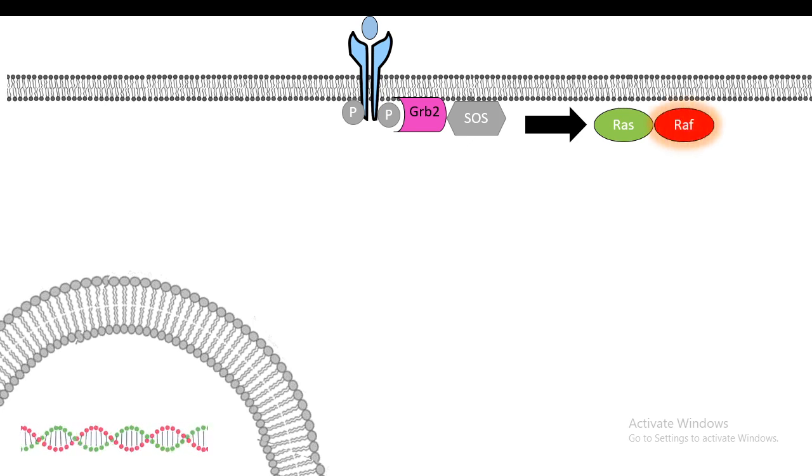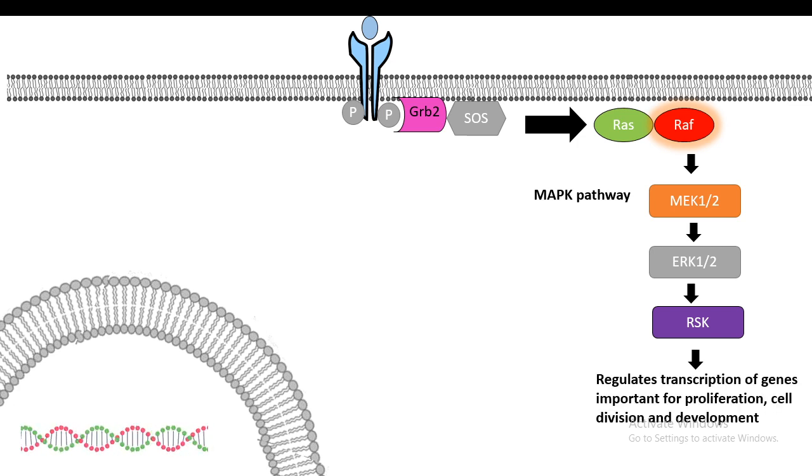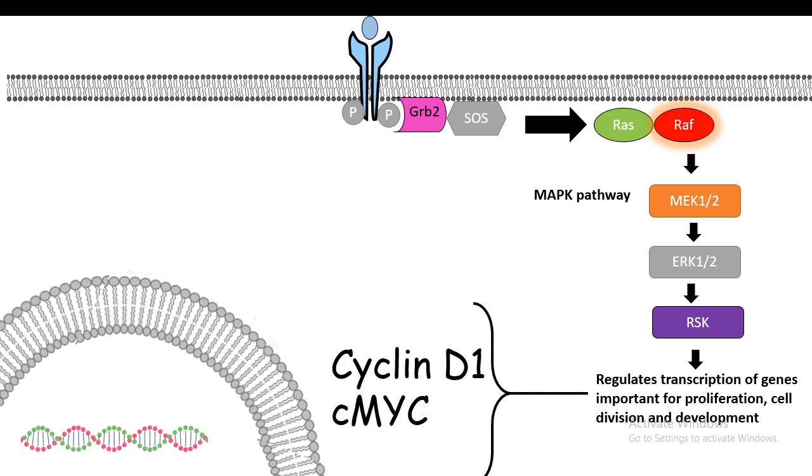Once Ras is activated, it activates another protein known as Raf. Raf is a kinase. Raf in a sequential fashion activates MEK, ERK, and RSK, and ultimately it results in gene transcription. Many of these target genes are actually cell cycle control genes such as c-Myc and cyclin D1. So clearly, this Ras MAP kinase pathway can ultimately give rise to growth or cellular division phenotypes.